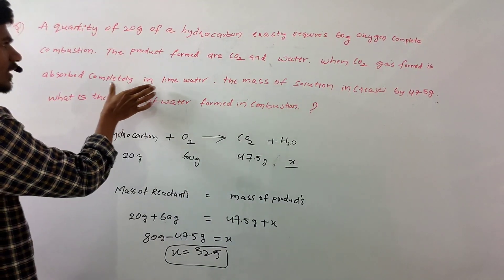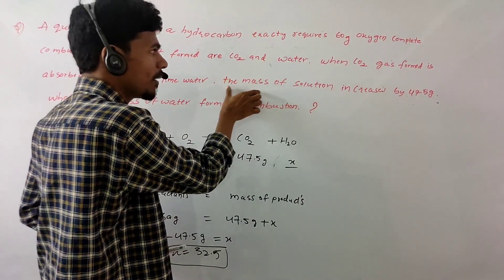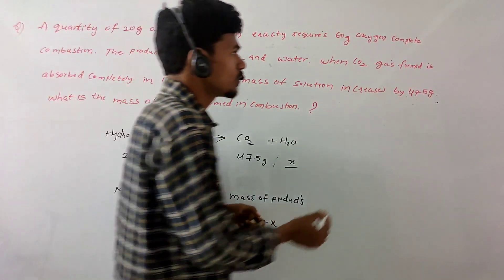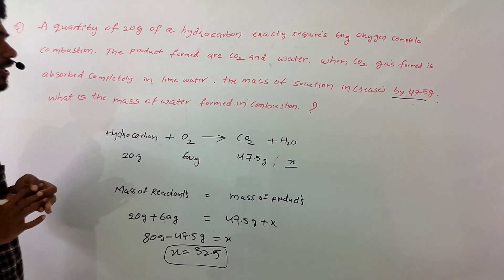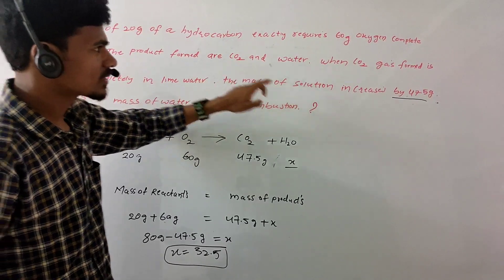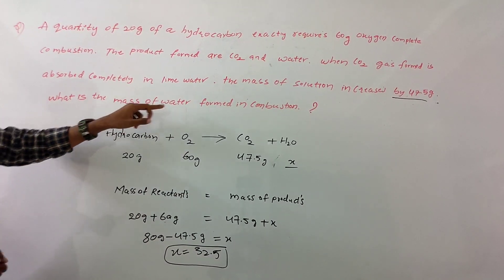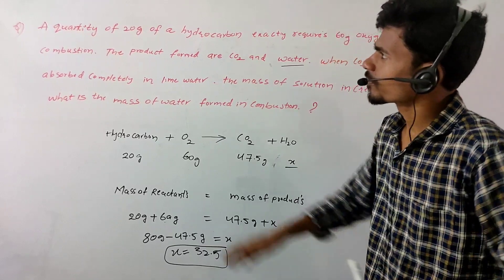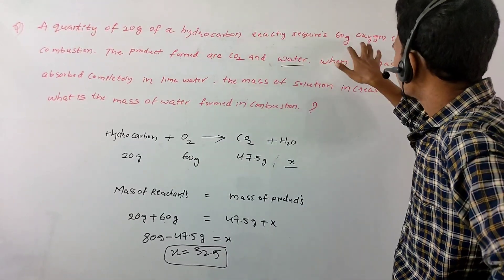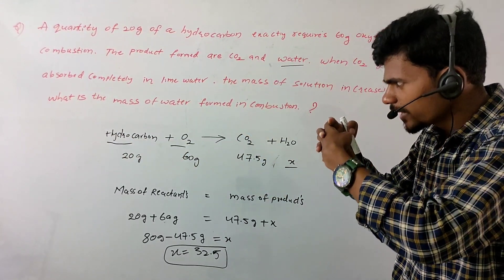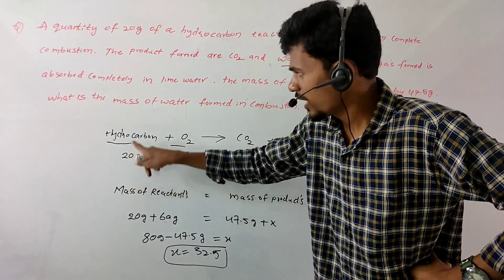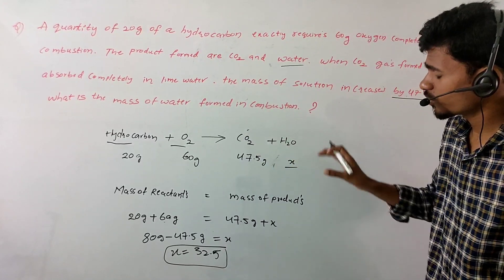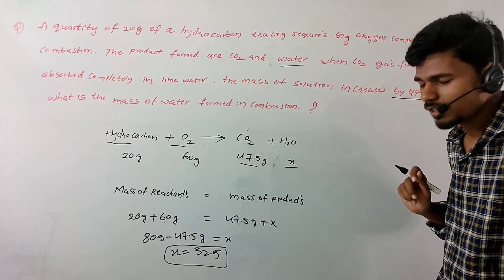When CO2 gas is formed, it is absorbed completely in lime water, so the mass of solution increases by 47.5 grams. So the mass of CO2 is 47.5 grams. Then, what is the mass of water? The water mass we have to find. The reactants are hydrocarbon plus oxygen — 20 grams of hydrocarbon and 60 grams of oxygen combine.